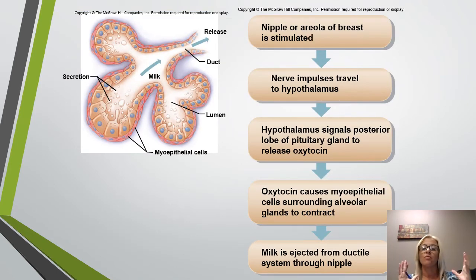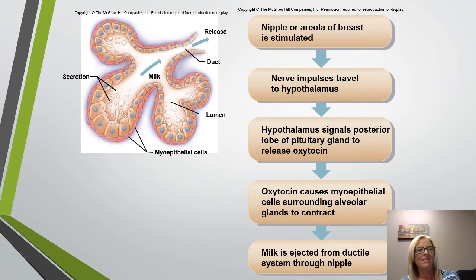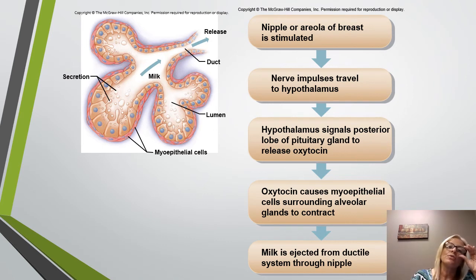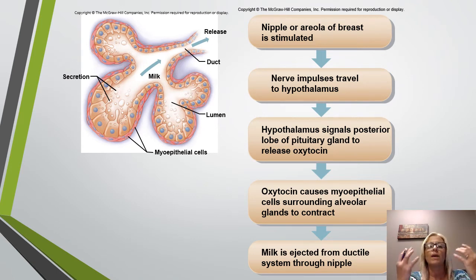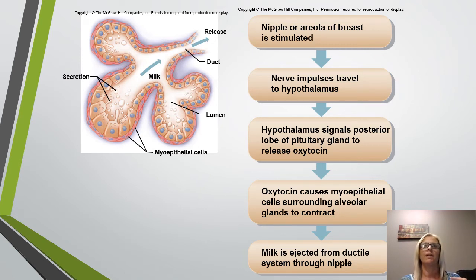If you've ever nursed a baby, you're familiar with the let-down reflex, which always happens at the most inconvenient time — like when you're in the grocery line and a baby cries. Milk doesn't flow readily through the duct system of the mammary glands, but it's ejected through specialized myoepithelial cells that surround the alveolar glands. This is controlled by a reflex when the baby sucks, which causes oxytocin to be released. We also have a learned stimulus response to the crying of a baby, which is when the let-down can occur at an inappropriate time.